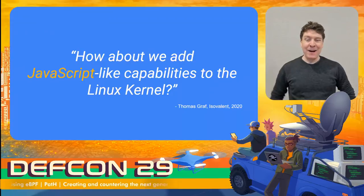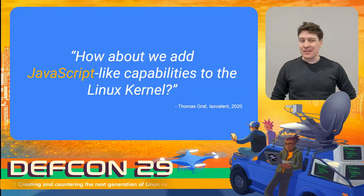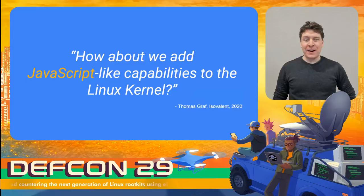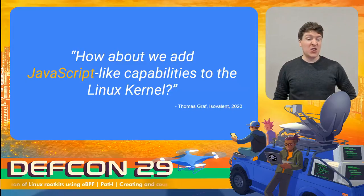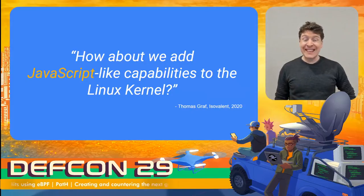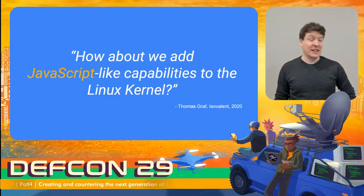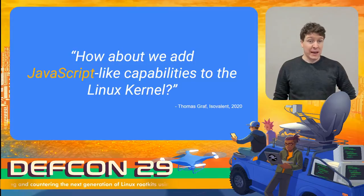How about we add JavaScript-like capabilities to the Linux kernel? To some people, this quote might sound like the wildest thing they've ever heard. But when Thomas Graff from Meta made it, he wasn't talking literally about putting JavaScript in the kernel. What he was talking about was introducing a way to run a certain type of code that has the visibility of the kernel, but with the ease, safety, and portability of user space systems such as JavaScript programs. And really what he was talking about was eBPF.